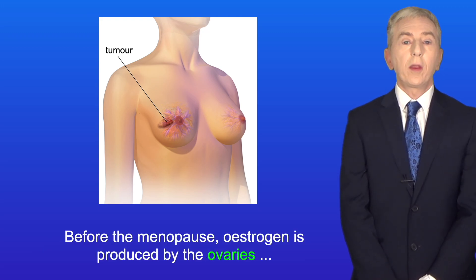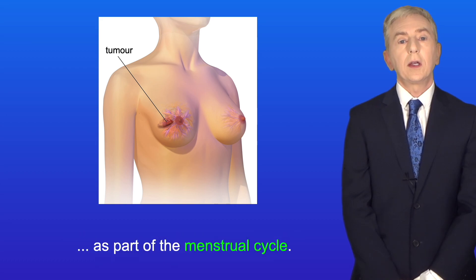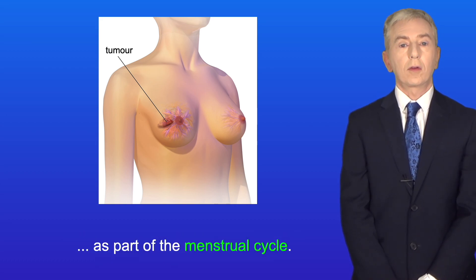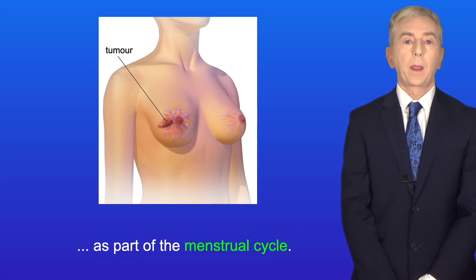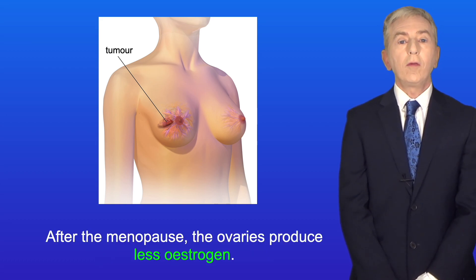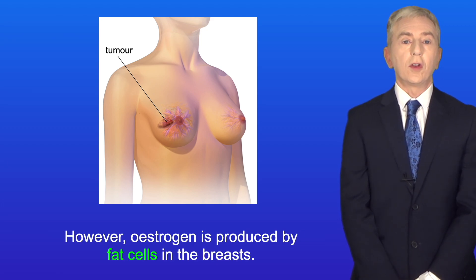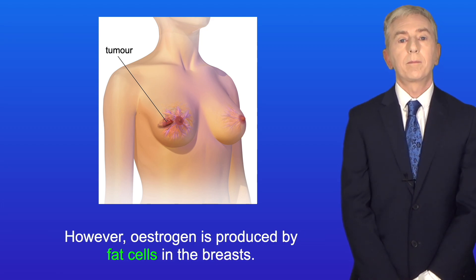Before the menopause, oestrogen is produced by the ovaries as part of the menstrual cycle. After the menopause the ovaries produce less oestrogen; however, oestrogen is still produced by fat cells in the breasts.